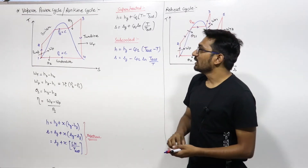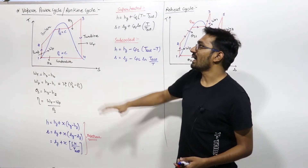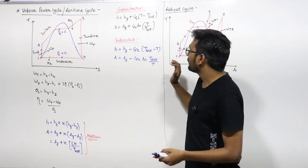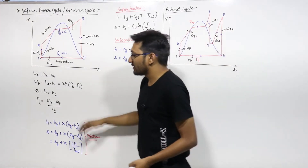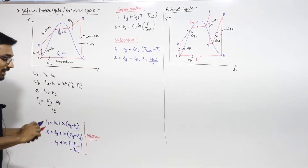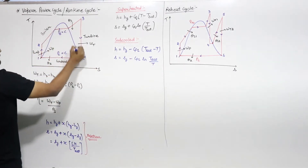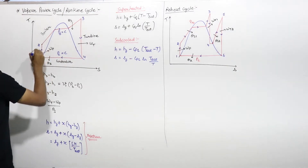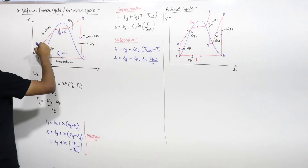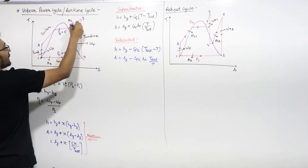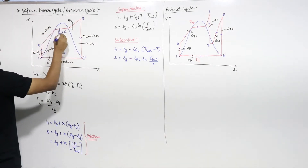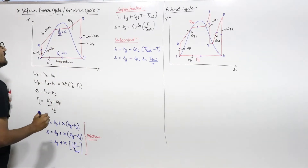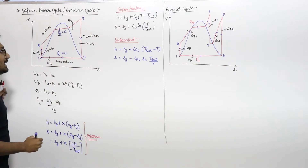The second cycle in the power plant is the Rankine cycle, or the vapor power cycle, in which steam is flowing. Let us draw the T-S diagram. This is the vapor dome. This is the inlet of the pump. From 1 to 2 it is adiabatic compression in the pump. From 2 to 3 it is heat supplied at constant pressure — that is the boiler pressure — constant pressure heat addition.